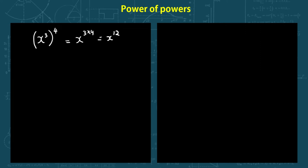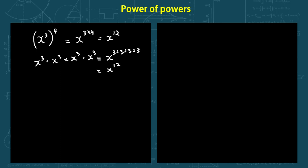Let's see the proof. I have x cubed multiplied by x cubed, four times. This will be equal to x to the power of 3 plus 3 plus 3 plus 3, which is x to the power of 12 — or basically 3 times 4.